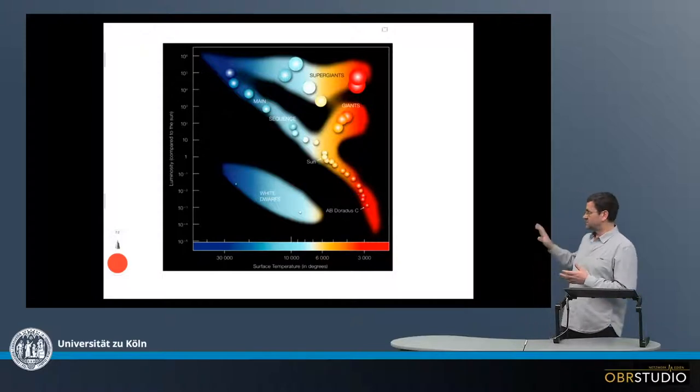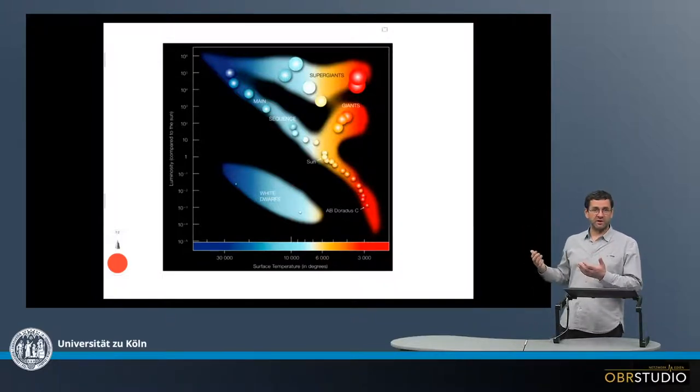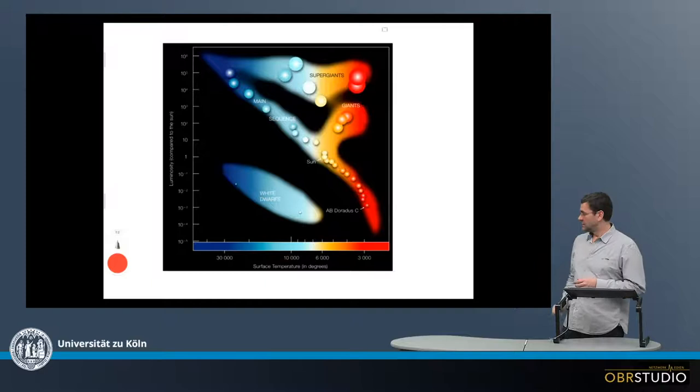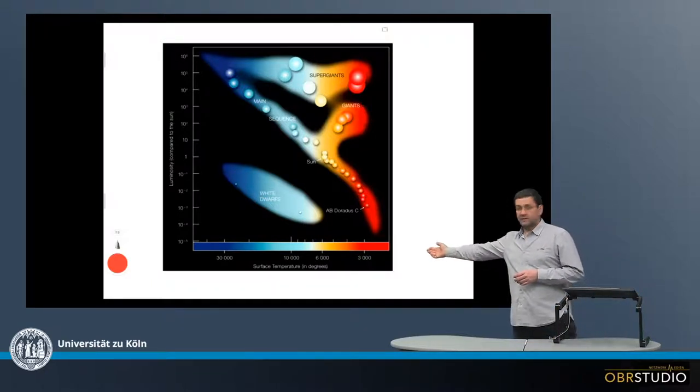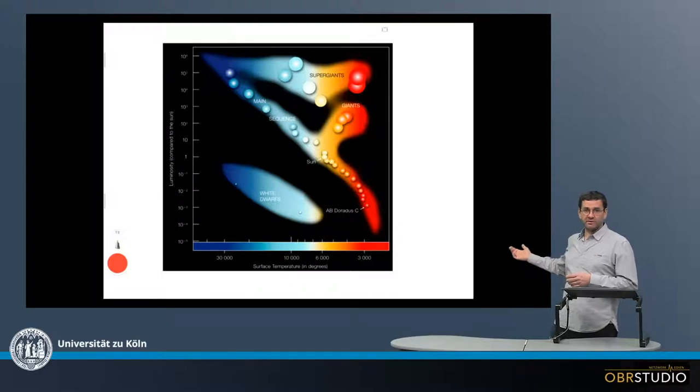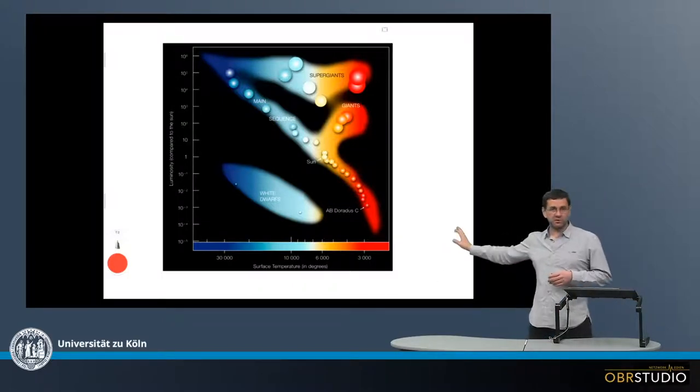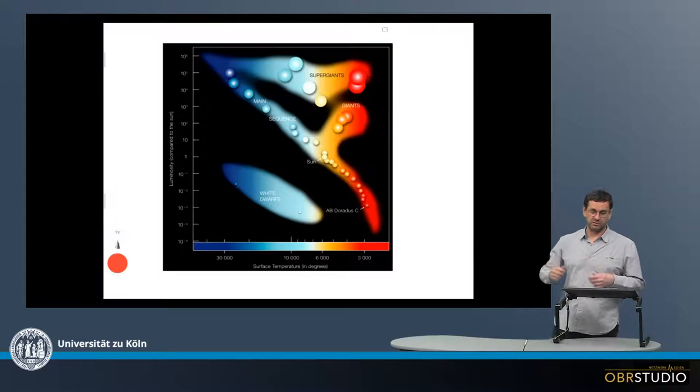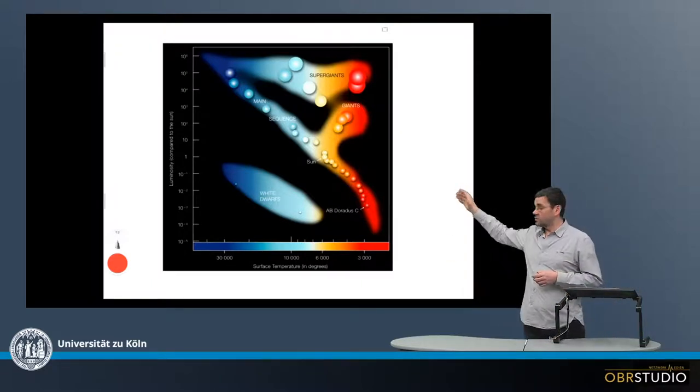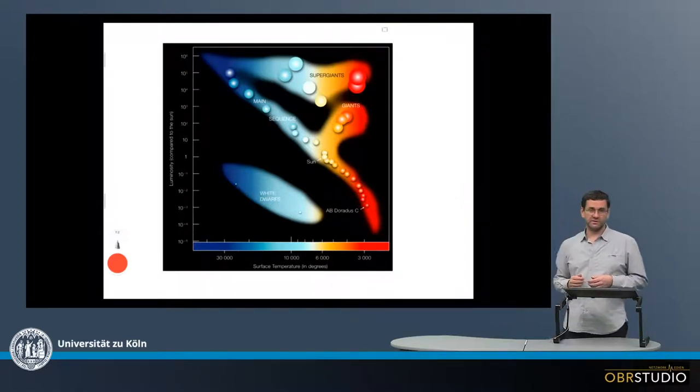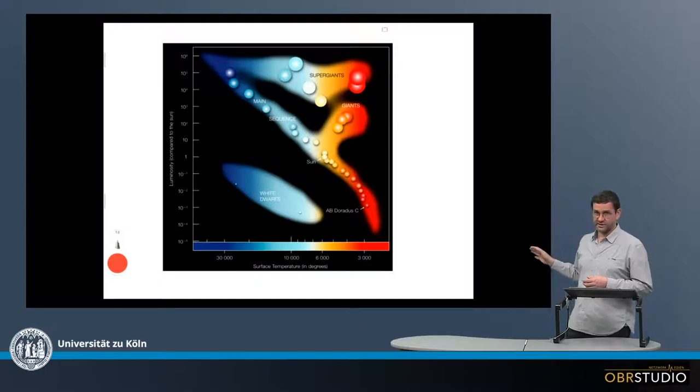For us, it's just important to know the fundamentals of this plot. So here on the x-axis, there's the temperature increasing into this direction towards blue, because hotter stars become more blue, and on the y-axis, there's the luminosity. Both are log scales.